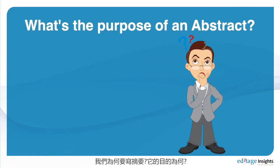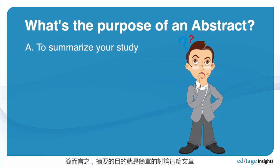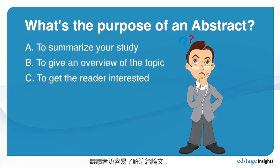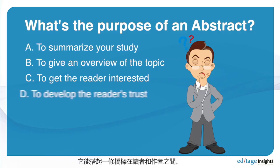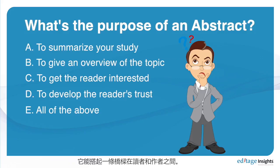What's the most important purpose of an abstract? Is it a simple summary? Is it an overview of the topic to be discussed? Is it to get the reader interested in the paper? To develop trust between the author and the reader? Or all of the above?